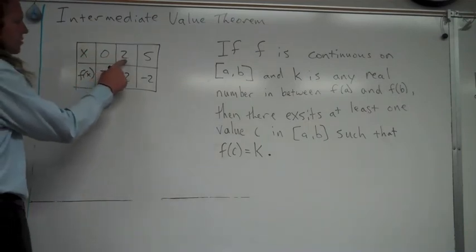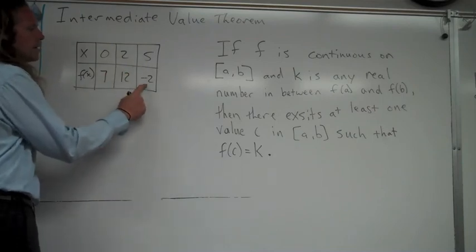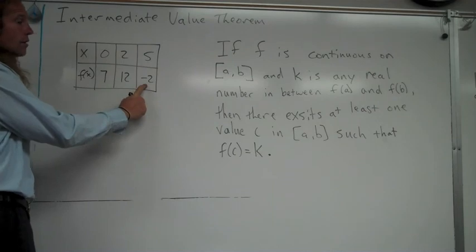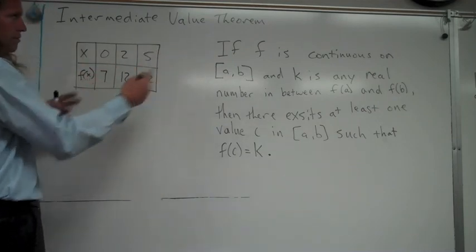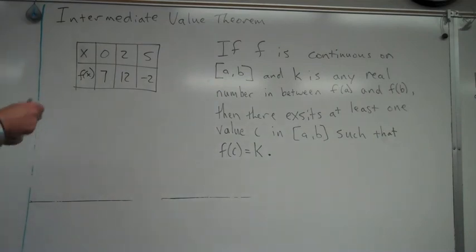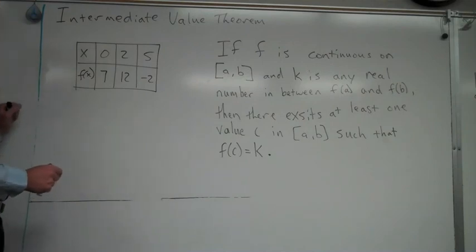And if you look here I can notice and say hey, at x equals two I see that the y value is twelve, at x equals five I see the y value is negative two. So assuming this function is continuous, which would have to be in order to fit into this intermediate value theorem, if it is continuous, you know that somewhere in the interval from two to five this function is going to be equal to zero.